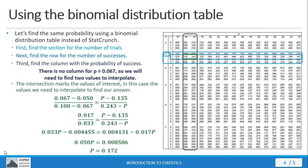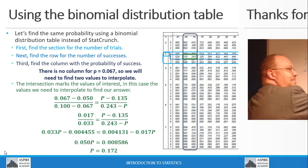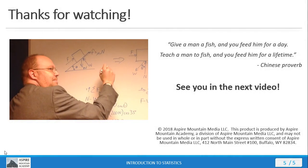If you have to interpolate, just use StatCrunch and get the exact value. If you want to go old school with the table, the number won't be exactly the same but it'll be close enough. And that brings us to the end of this mini lecture. I hope you found it helpful. You can find more mini lectures for this and other courses at AspireMountainAcademy.com. Thanks for watching — I'll see you in the next video.